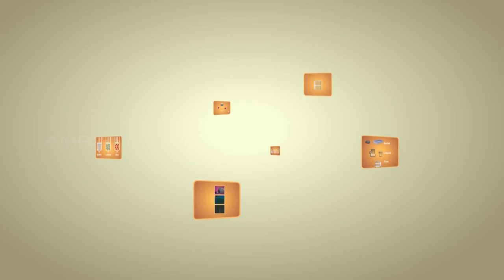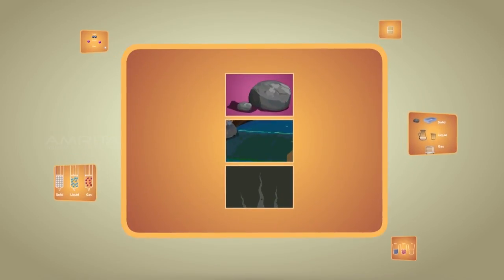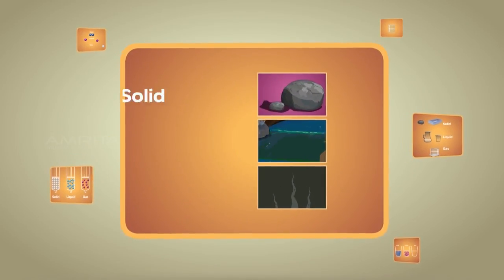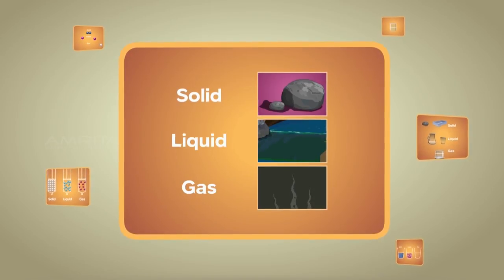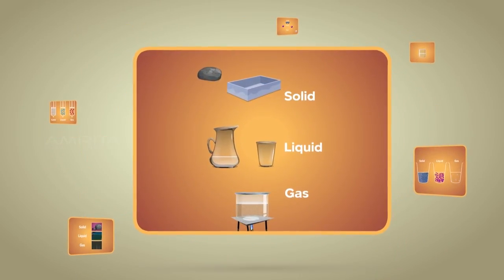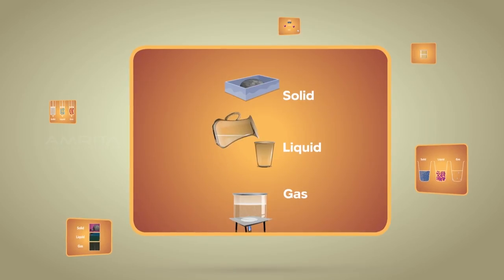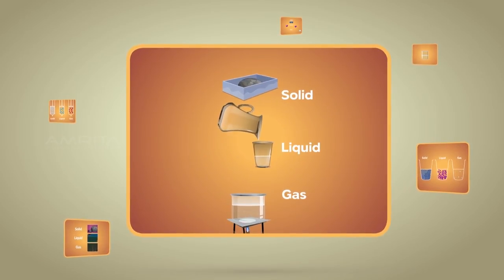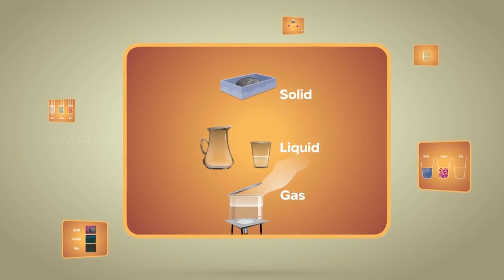Things to remember. Matter exists in three states: solid, liquid and gaseous. Solids have definite shape and volume. Liquids have no fixed shape but have a fixed volume. Gases have no definite shape and volume.